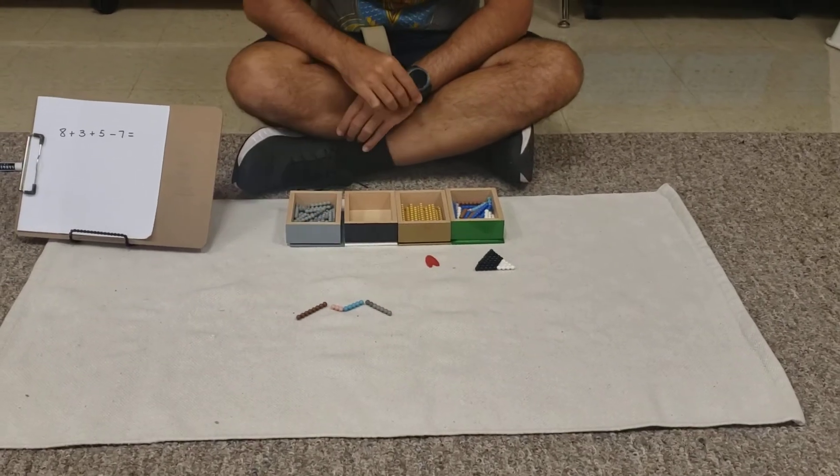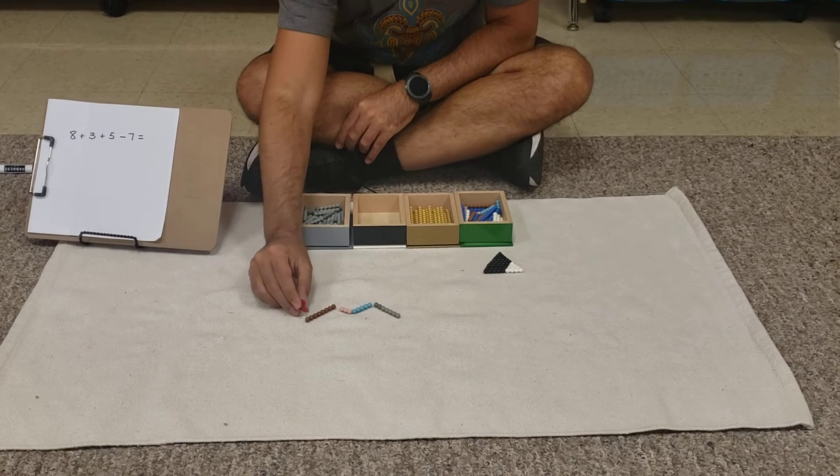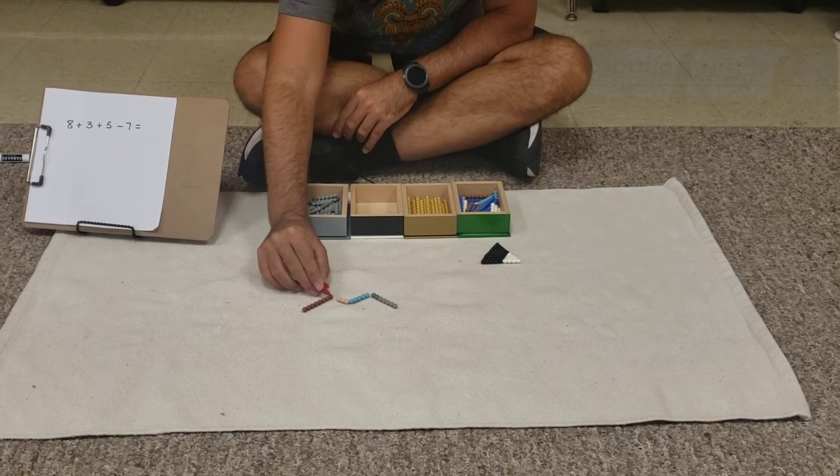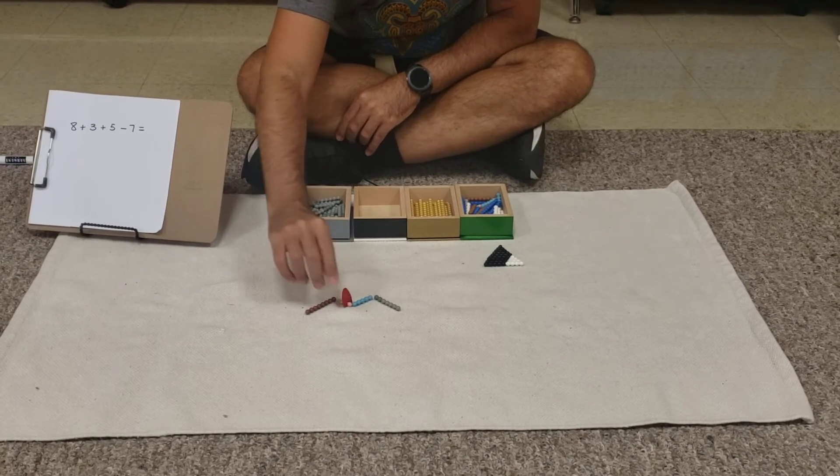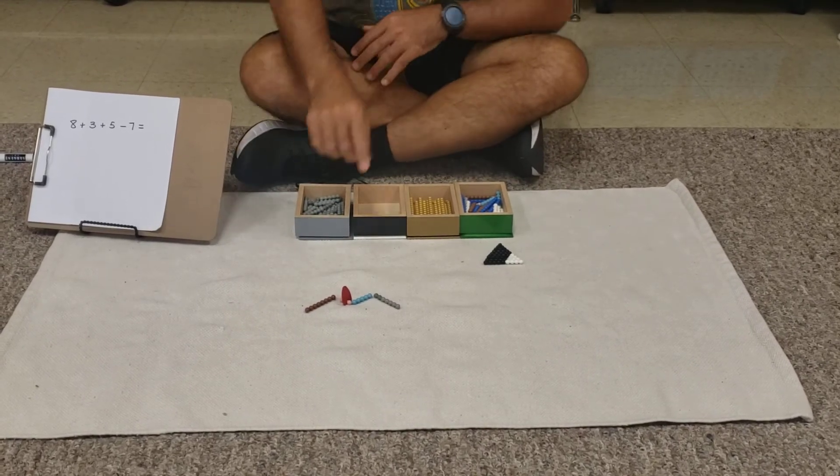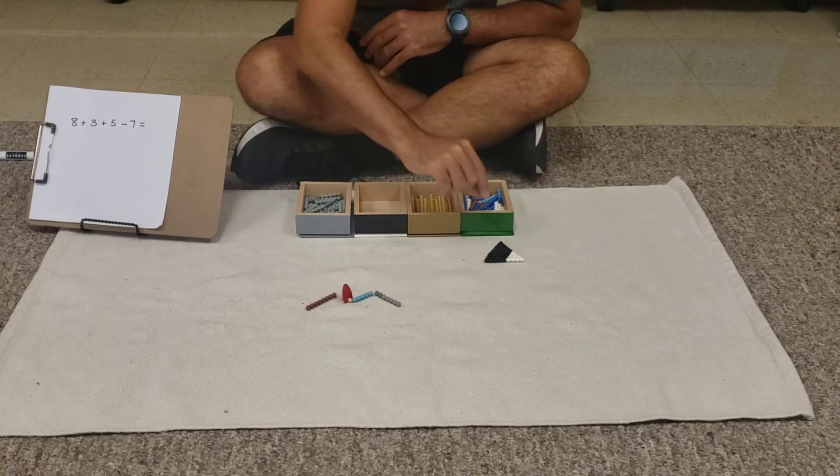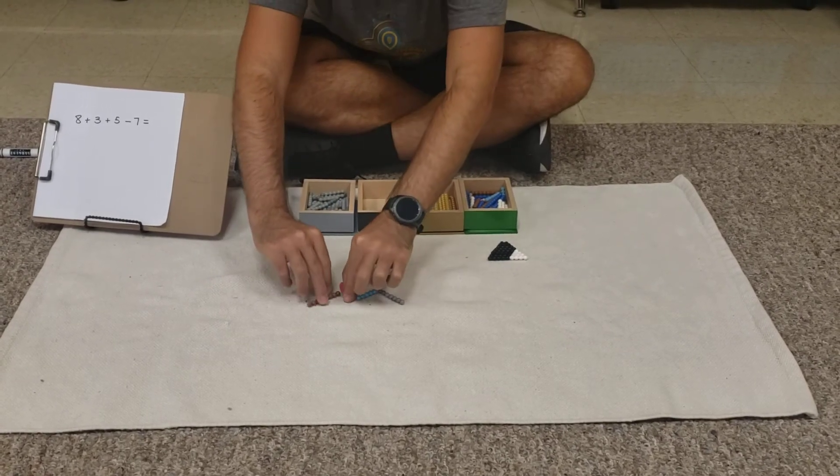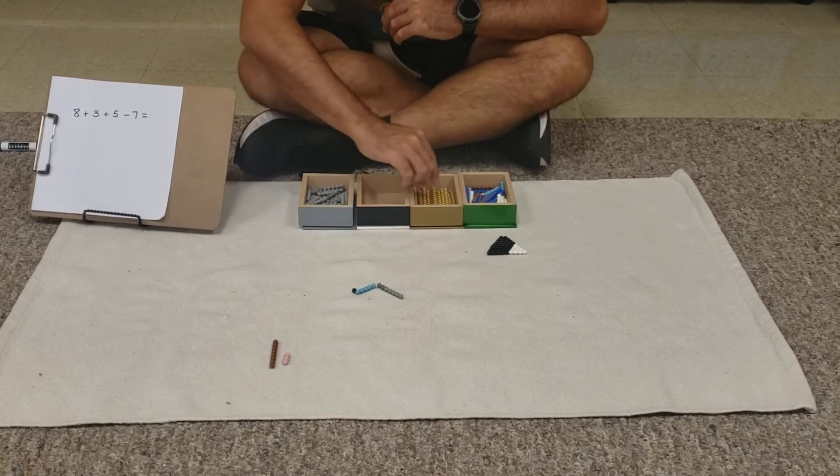So we have a snake and we're going to start counting. So we start 1, 2, 3, 4, 5, 6, 7, 8, 9, 10. So that means that we still have 1 so we're going to put our bead holder and we're going to change these ones for a 10.